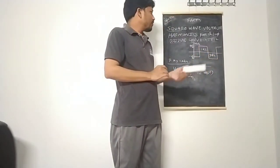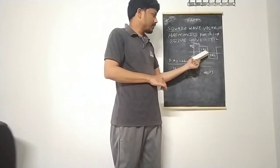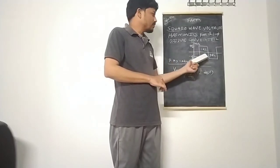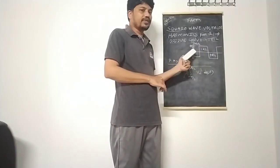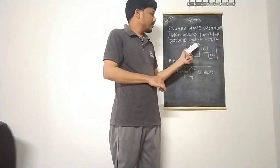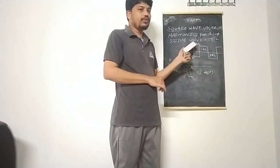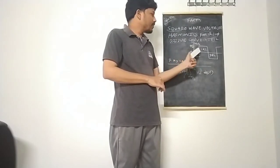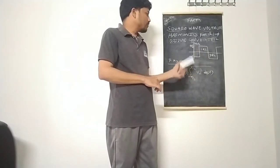Our aim here is to find the harmonics of this particular voltage waveform and also the RMS values of the voltage. The peak voltage is plus VDC or minus VDC. The RMS voltage and the harmonics of the RMS voltage are what we need to determine.